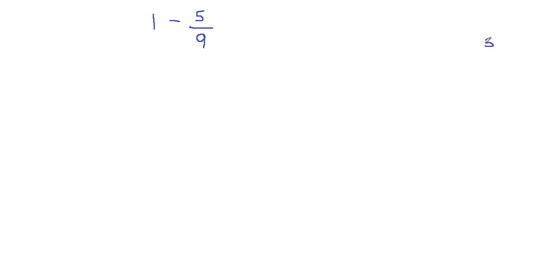Let's say if you have 5 over 5, you can simplify that to 1 because 5 divided by 5 is 1. So when you have the same top number and the same bottom number, you can simplify that to 1.